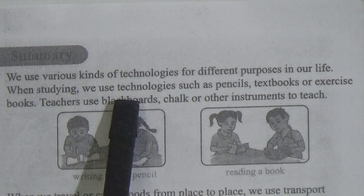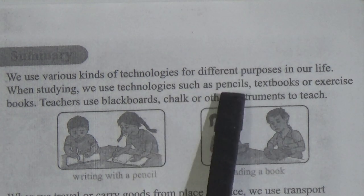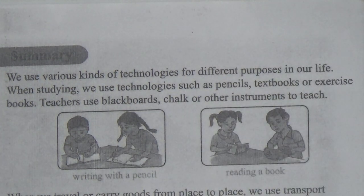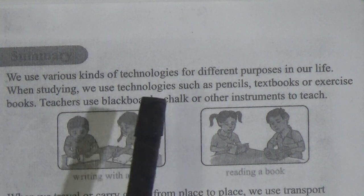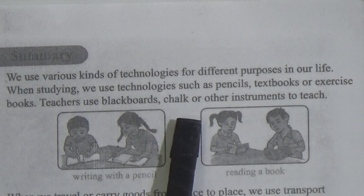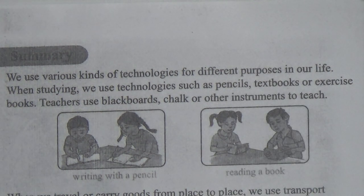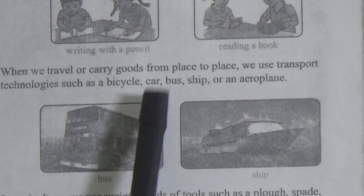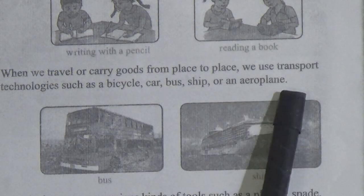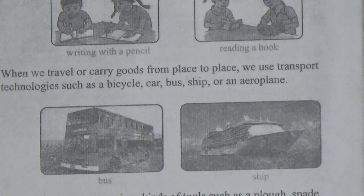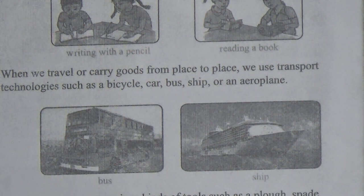When studying, we use technologies such as pencil, textbook and exercise books. Teachers use blackboards, chalk or other instruments to teach. When we travel or carry goods from place to place, we use transport technologies such as bicycle, car, bus, ship or an aeroplane. In agriculture, we use various kinds of tools such as plough, spade, sickle or tractor for cultivation.